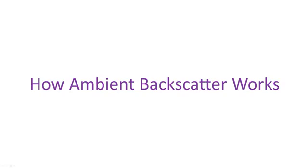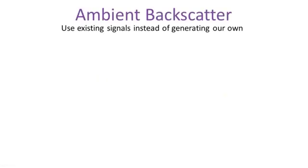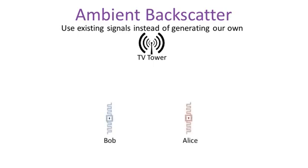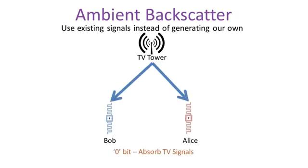Ambient Backscatter enables wireless communication by leveraging the signals all around us instead of generating our own. Say two devices, Alice and Bob, need to communicate. Alice can send a message to Bob by either absorbing or reflecting signals from a nearby TV tower. Alice sends a zero bit by absorbing all the incident TV signals and a one bit by reflecting these TV signals. Alice and Bob do not generate their own RF signals and they use no batteries. Thus, Ambient Backscatter enables wireless communication out of thin air.